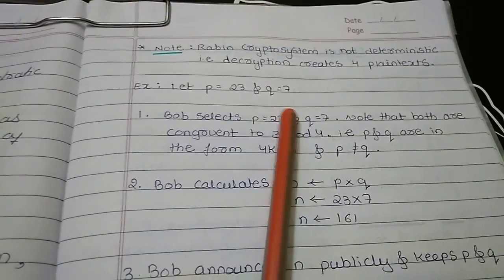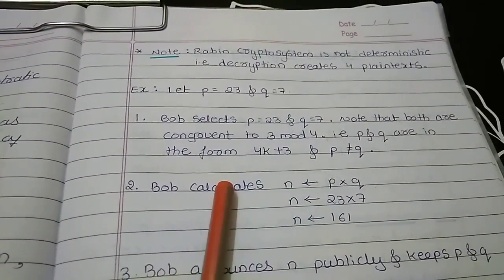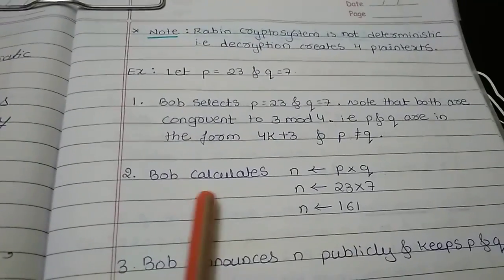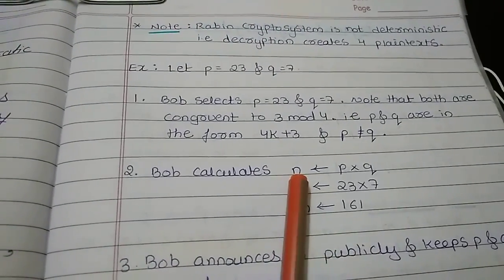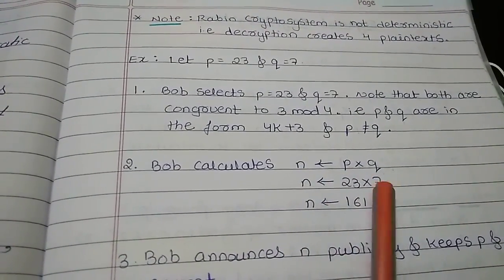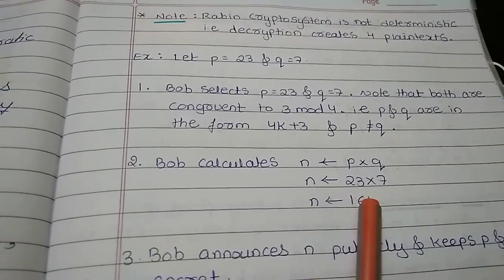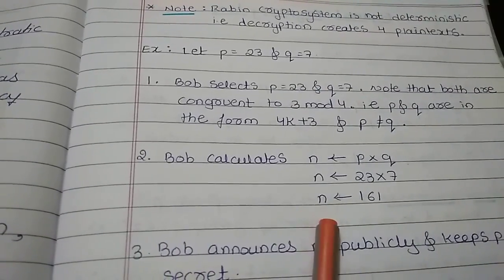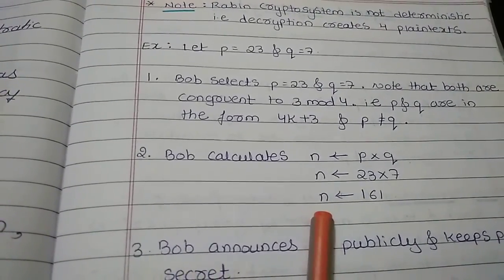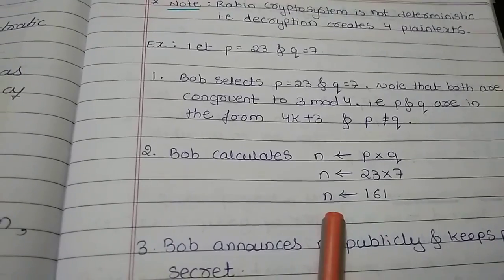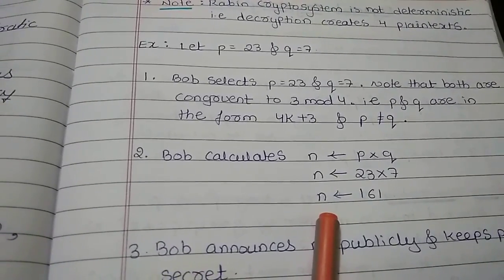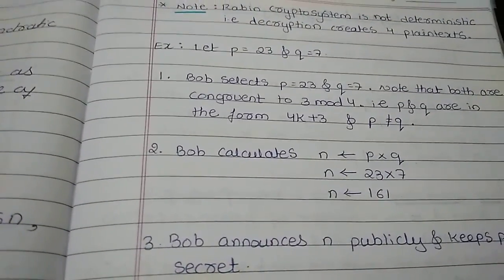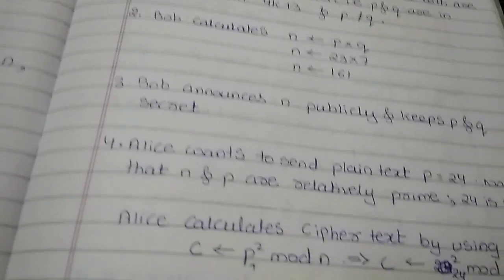And since the value of P is not equal to Q, then we can go ahead with the example. So now the receiver called Bob is going to calculate the value of N. He is going to multiply the value of P and Q, that is 23 and 7, and obtain the value 161 which is the value of N. Now Bob is going to announce this value of N as the public key so that whoever wanted to send the data can take this value of N to send the data to Bob. That's why I have written here Bob is going to announce N publicly and keeping the value of P and Q secret.